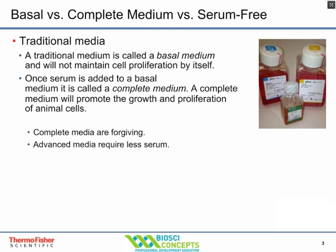Because complete media has so much serum protein in it, it is considered more forgiving — a little easier to use, and your animal cells will forgive some minor mistakes. There are also advanced medias, which are reduced serum medias similar to traditional medias like RPMI 1640 or DMEM, but with a few more additives that allow you to grow cells at maybe 5% or 2% serum as opposed to 10%, which can be advantageous for certain growth conditions.